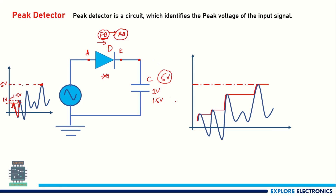The disadvantage of this circuit is that the diode has a finite resistance. Because of the voltage drop across the diode, we do not get the peak exactly — there will be a reduction in the output voltage compared to the actual peak.